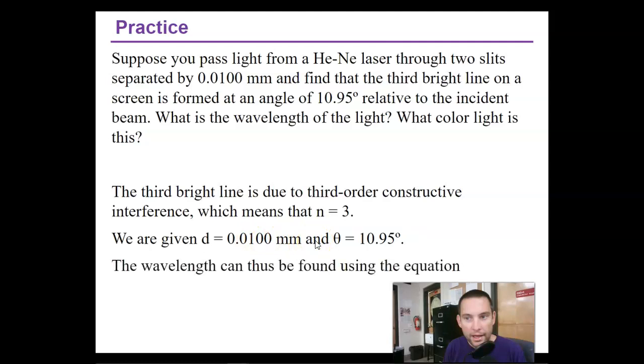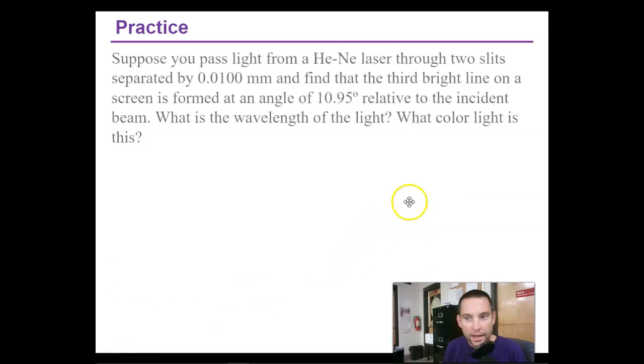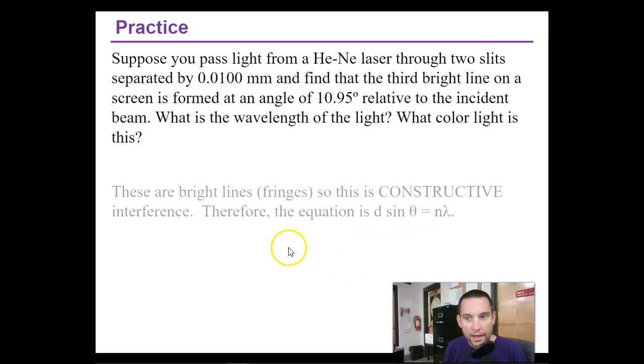The wavelength can then be found using the equation d sine theta equals n times lambda for constructive interference. These are bright fringes, so this is constructive interference. Therefore, the equation is d sine theta equals n times lambda.